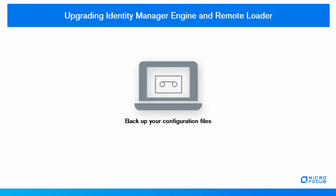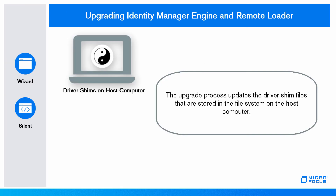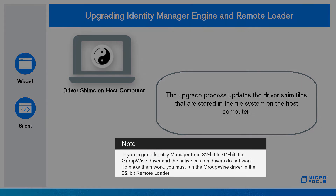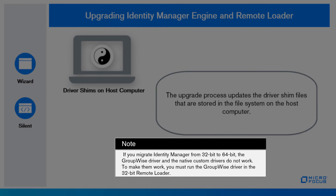Upgrading Identity Manager Engine. You can upgrade Remote Loader along with the Identity Manager Engine upgrade. Before you start, create a backup of the remote loader configuration files and stop all drivers that are running. The upgrade process updates the driver shim files stored in the file system on the host computer. If you migrate Identity Manager from 32-bit to 64-bit, the GroupWise driver and native custom drivers do not work.